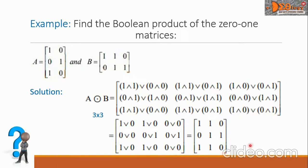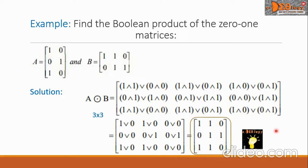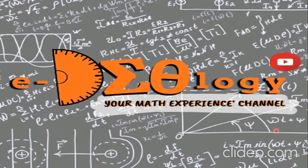The Boolean product of matrices A and B is the matrix [[1,1,0],[0,1,1],[1,1,0]]. This is the final answer. I hope you learned something from this video — see you again next time!